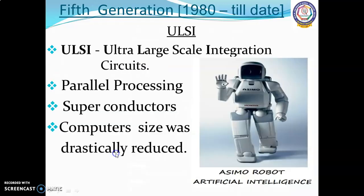The fifth generation of computers, from 1980 onwards, used ULSI — ultra-large-scale integration circuits. It featured parallel processing and superconductors. Computer size was further reduced and it could recognize images and graphics. This generation introduced artificial intelligence and expert systems, capable of solving complex problems including decision making and logical reasoning.